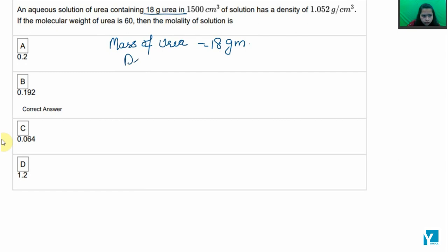We are given the density of 1.052 grams per cubic centimeter. Also, we are given the volume of water, that is 1500 cubic centimeters.